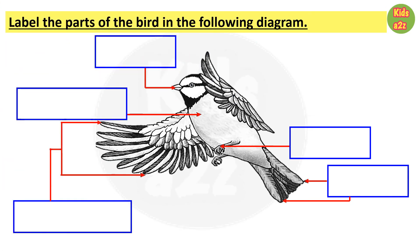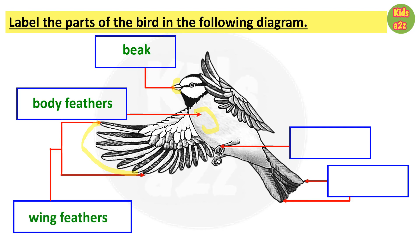Here a picture of a bird is given and kids need to label the different parts of the bird. This part is the beak. This portion is body feathers. All these are wing feathers. This is the foot and these are tail feathers.